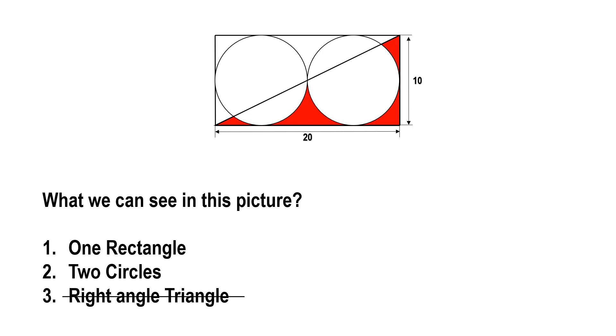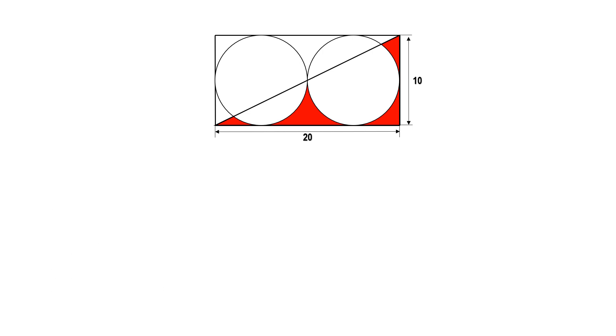Because with the rectangle and the circles itself we can easily find out the area of the red spots. Let me explain you how. If you notice the red colored spots, it is exactly half of the rectangle.